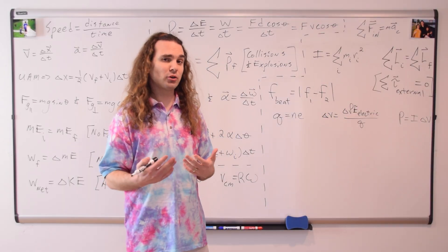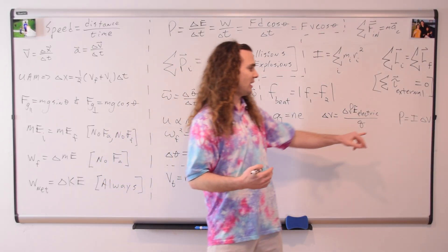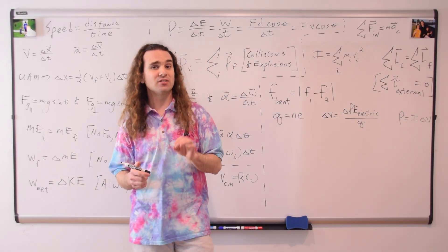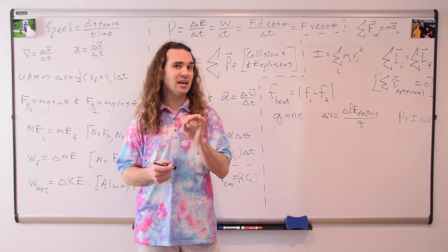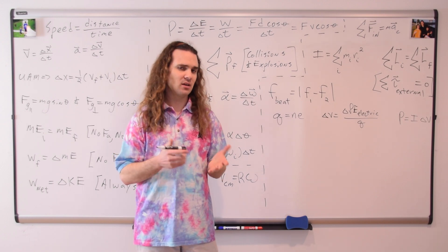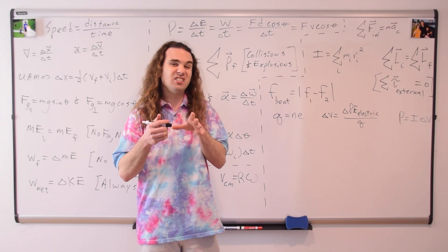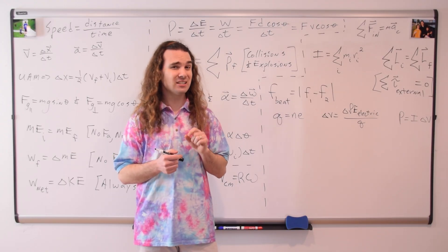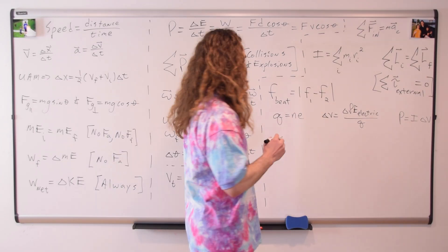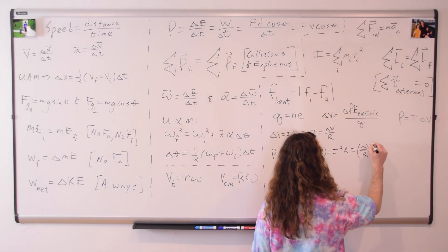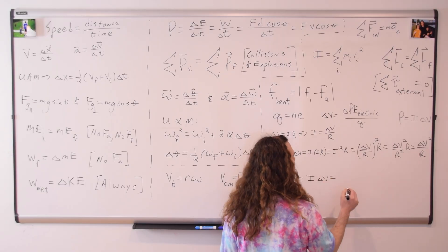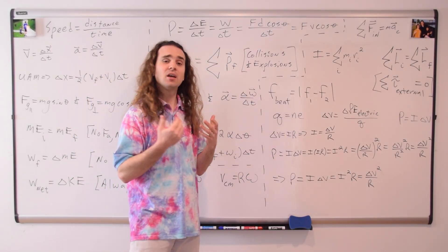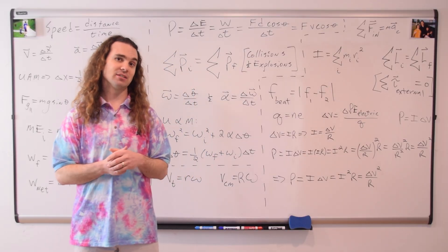The only equation for electric power on your equation sheet is that electric power equals current times electric potential difference. Remember, electric power is the rate at which energy is being converted to heat and light in a circuit element — sometimes called the rate at which energy is dissipated. Using the equation electric potential difference equals current times resistance, we can show that electric power also equals current squared times resistance, and electric potential difference squared divided by resistance.